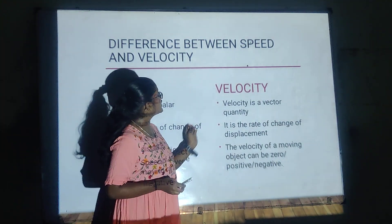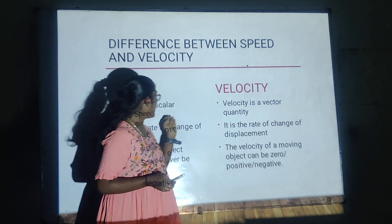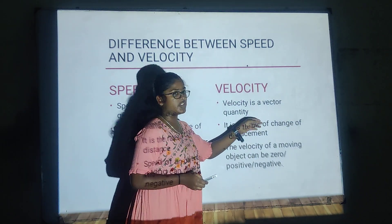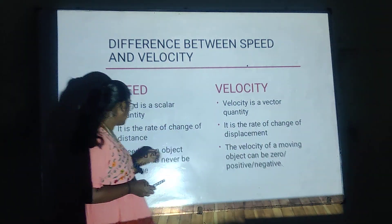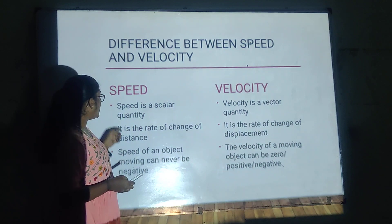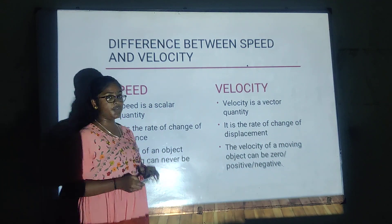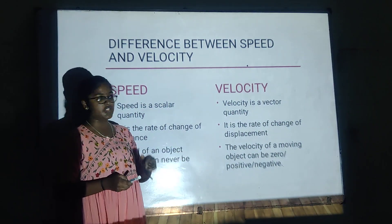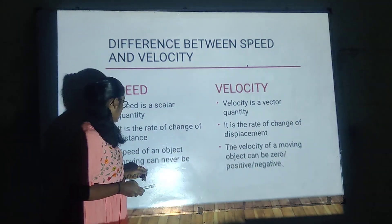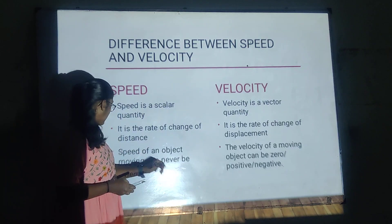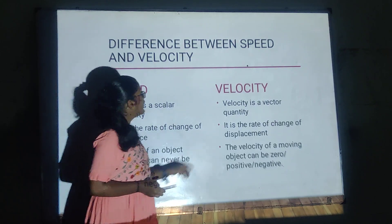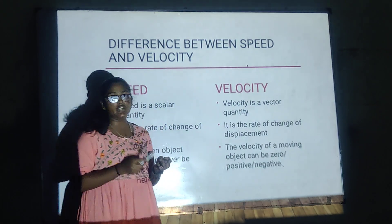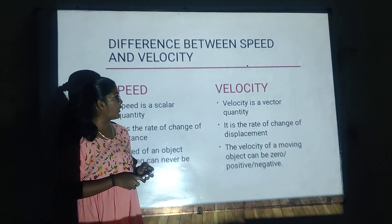Now what is the difference between speed and velocity? Speed is a scalar quantity and velocity is a vector quantity. Speed is the rate of change of distance and velocity is the rate of change of displacement. Speed of a moving object can never be negative, whereas velocity can be negative, zero, or positive.